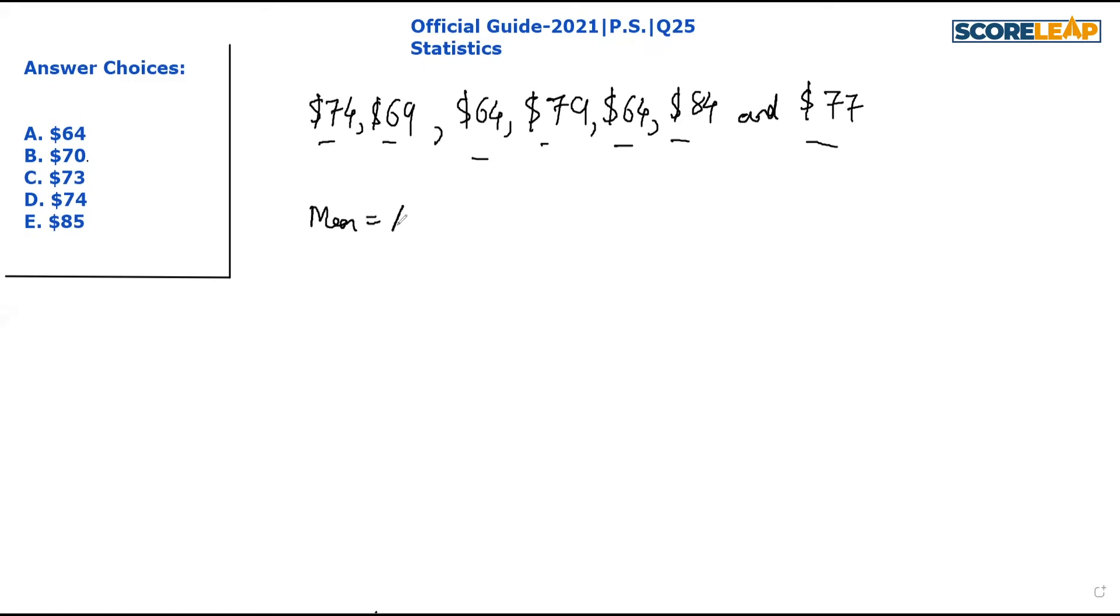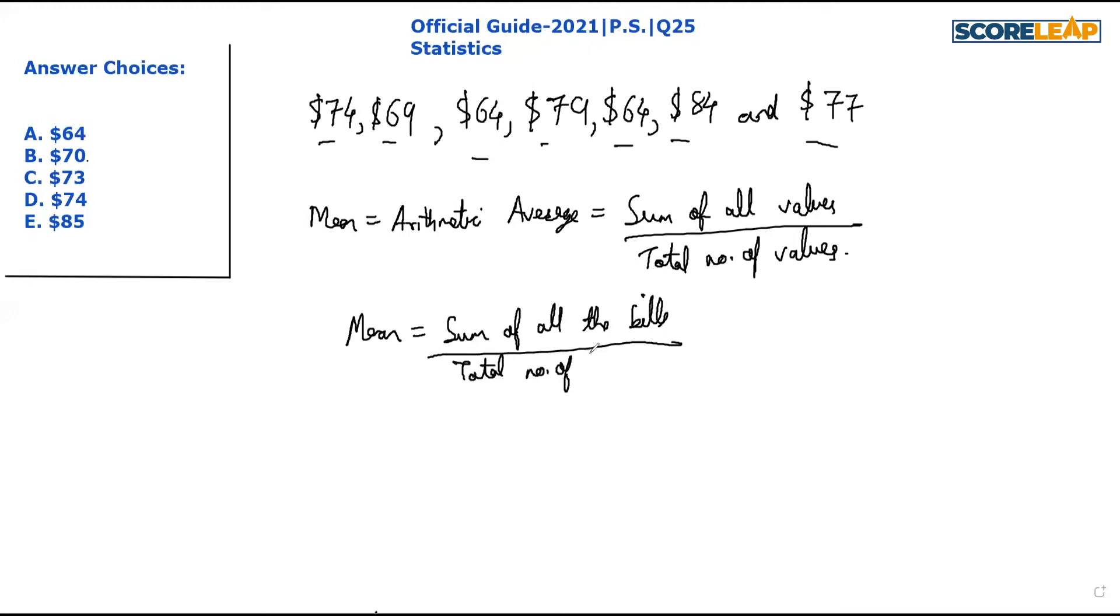The formula to find the arithmetic average is sum of all values divided by total number of values. If we apply it here, mean of grocery bills can be figured out as sum of all the bills divided by total number of bills.